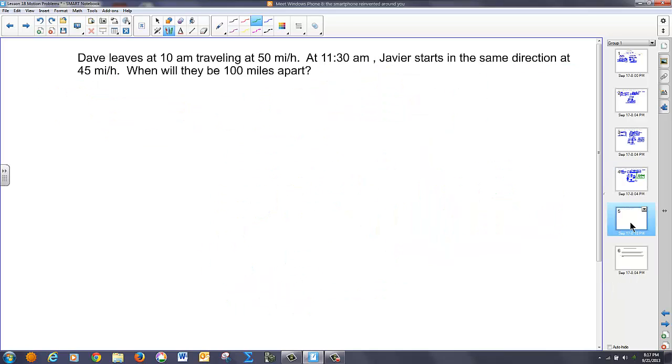Let's do one more. So, in this problem, Dave leaves at 10 a.m. traveling at 50 miles an hour. And, 11:30 Javier leaves going in the same direction at 45 miles an hour. So, here's Dave and here's Javier going in the same direction and we want to know at what time will they be a total of 100 miles apart. So, this distance right here is 100.